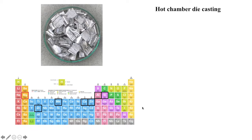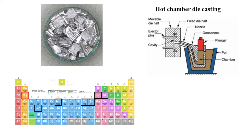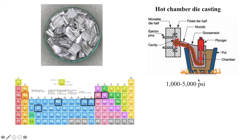Hot chamber die casting is a high pressure metal manufacturing process that forces molten metal into a mold cavity. The metal is contained in an open holding pot which is placed in the furnace. When the plunger is up, the molten metal flows into the shot chamber. As the plunger moves down, with injection pressures ranging from 1000 to 5000 psi, it forces the molten metal through a gooseneck and into the die, and then the cast is formed.